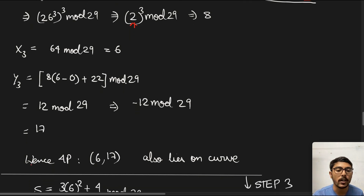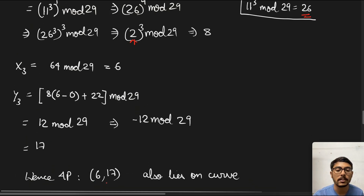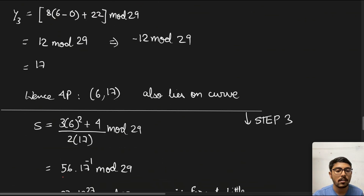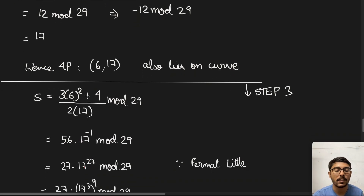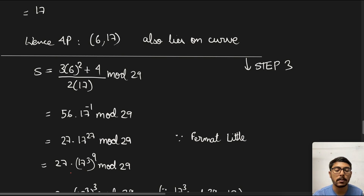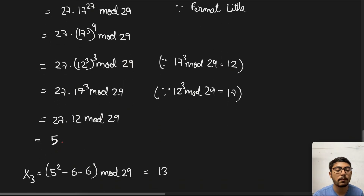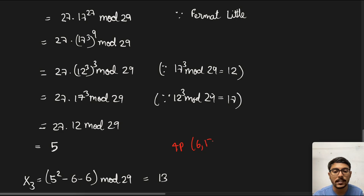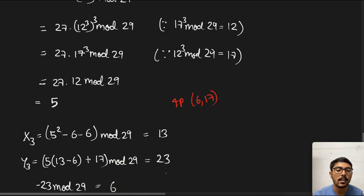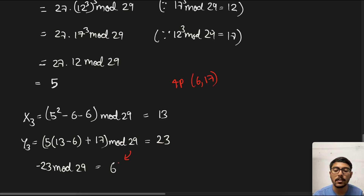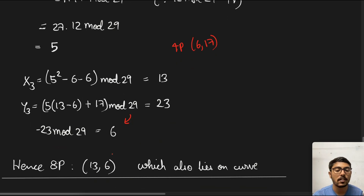Step 3: point doubling of 4P = (6, 17) to get 8P. We apply the doubling formula, computing s = 56 × 17⁻¹ mod 29. Using Fermat's little theorem we get 27 × 12 mod 29 = 5, so s = 5. Then x3 = 5² − 6 − 6 = 13. Putting this into the y3 equation gives 23; mirroring gives 6. So 8P = (13, 6), which also lies on the curve.